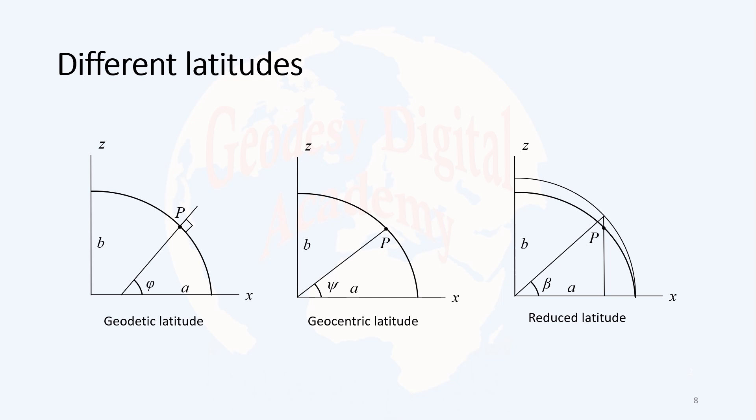Now we can define different types of latitudes at the surface of the ellipse. On the left hand side, you observe the normal to the ellipsoid. The normal to the ellipsoid, as I explained, will not go through the center of the ellipse. It will collide with the x-axis or the equatorial plane somewhere. And the angle between that normal and that plane or equatorial plane, which we show here as x in two dimensions, is called geodetic latitude.